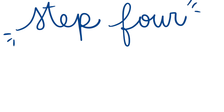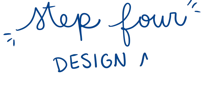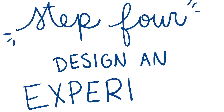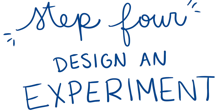Now that we have a hypothesis, the next step is designing our experiment. An experiment is a carefully designed way to test the hypothesis and see if our guess was right or wrong. In an experiment, scientists like to make sure only one thing is being changed or tested so that our results are clear and only answering the question that we asked.